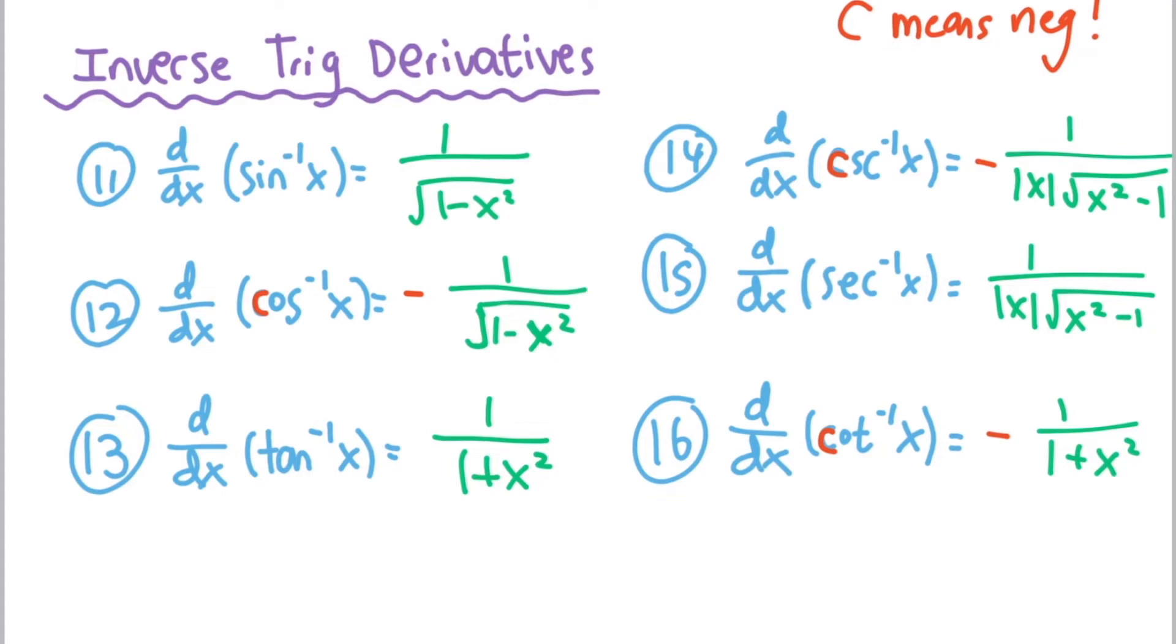And the next something you should realize is that for tangent and cotangent, like arc tangent and arc cotangent, look at your base. Your base is always 1 over 1 plus x squared. Except, remember the rule, c means negative. So you just need to remember that it's always 1 over 1 plus x squared for arc tan and arc cotangent, except that arc cotangent starts with the letter c, so it's going to have a negative sign.